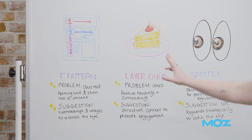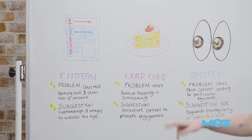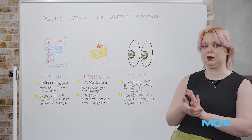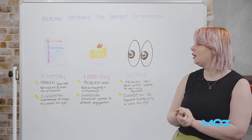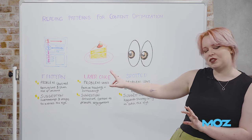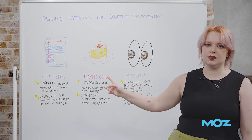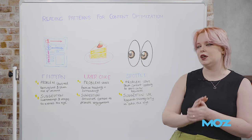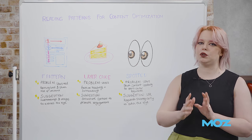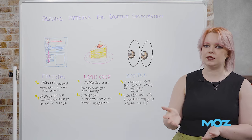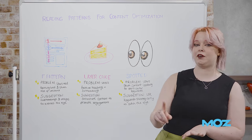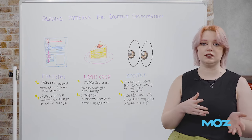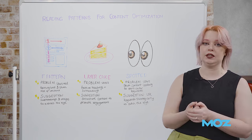First off, we've got our F pattern, which until maybe 2017 was kind of the default — this is how people are reading and engaging with content. The way that this works is users tend to look at your main headline on a page as well as maybe the first two or three lines of content in detail, and then from there they're going to skim through everything, just looking for things that maybe catch their attention.